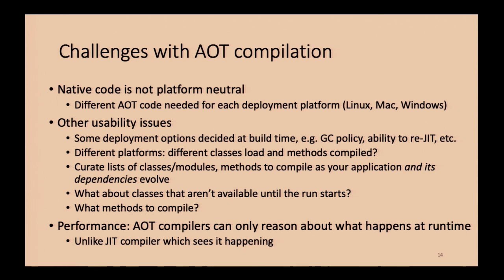There are other command-line options that change how code gets generated — like GC policy — which you're not exposed to when using JIT compilers because they just do the right thing transparently. But if you start using AOT, you get exposed to that. You'll get cases where you generate AOT code, run the application with dash-XX:AOTLibrary, and it won't get used because the library won't be compatible with how you're running the application — and it actually happens silently unless you add another option to tell you what's going on.